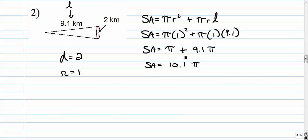So this is pi times 1 plus 9.1 pi, so this is 1 plus 9.1, that's 10.1 pi. Now some tests or something might ask you to actually just keep it in that form in pi form, but let's go ahead and multiply it out. We get 31.73 square kilometers.